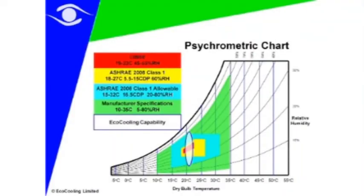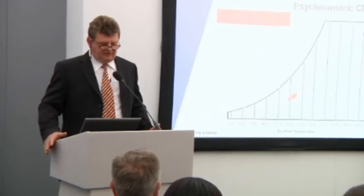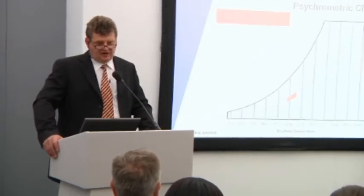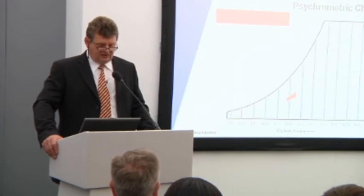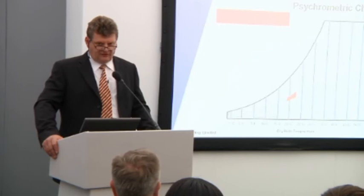Let's look at this on the psychometric chart — the tool that engineers use to understand the relationship between air and water. There is temperature across the horizontal axis and specific humidity vertically. The hotter air gets, the more water it can support. Most data centres and server rooms have been designed to the typical UK guidelines from CIBSE — the Chartered Institute of Building Service Engineers — which specify 19 to 23 degrees centigrade and 45 to 55% relative humidity.